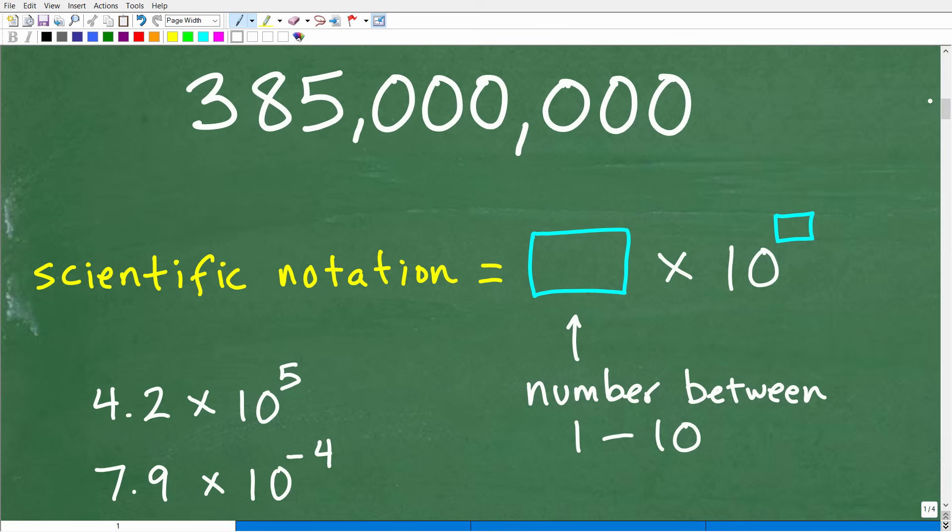So 385 million, very large number. And again, scientific notation, we want to write this number in scientific notation. So the general format of a number written in scientific notation is going to be some number between 1 and 10 times 10 to some power. So here's some examples of numbers written in scientific notation. So just notice here, 4.2 is a number between 1 and 10, and it's being multiplied by 10 to some power. In this case, it's a positive. And then here I have 7.9. Again, that's a number between 1 and 10 times 10 to some power, but I have a negative power.